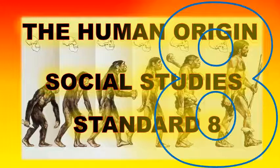Homo habilis was a little skillful. He evolved into Homo erectus, found at Olduvai Gorge and also in Ethiopia. Homo erectus means an upright man — he could walk upright. He made tools such as hand axes, spears, and arrowheads from stones. He was the first man to use fire and was also able to communicate through speech.